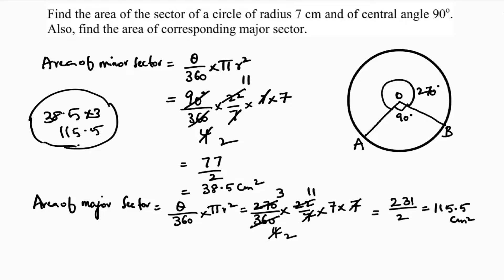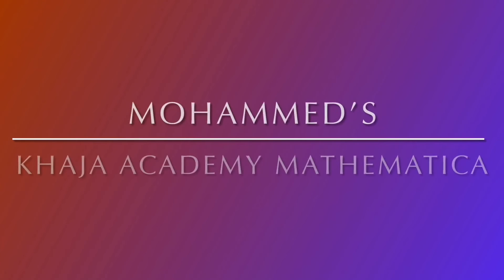But otherwise just use the 270 degrees and just do it. So area of minor sector is 38.5 centimeter squared and area of major sector is 115.5 centimeter squared.